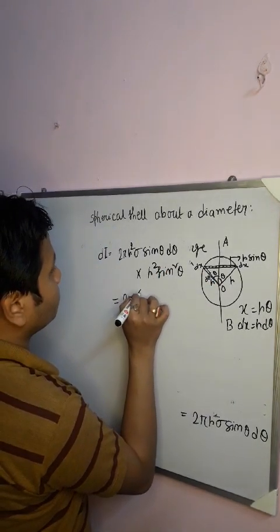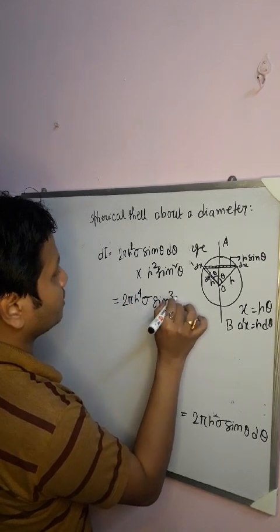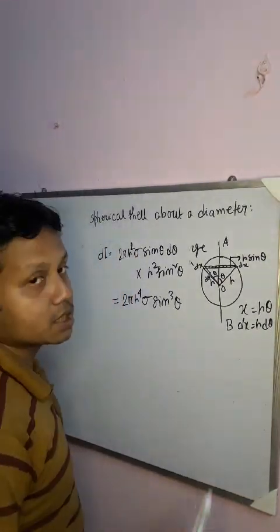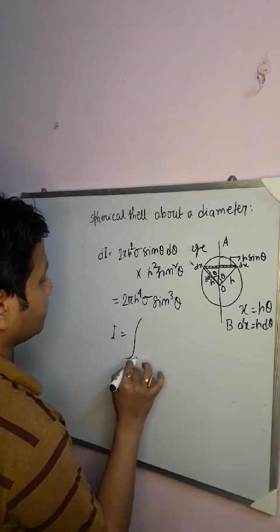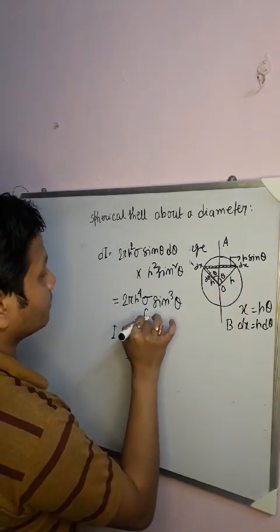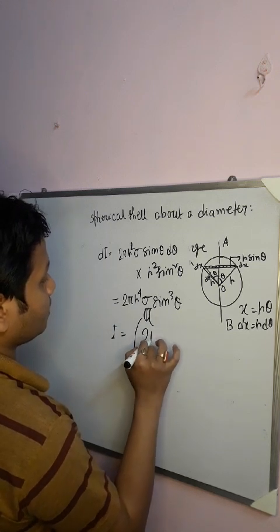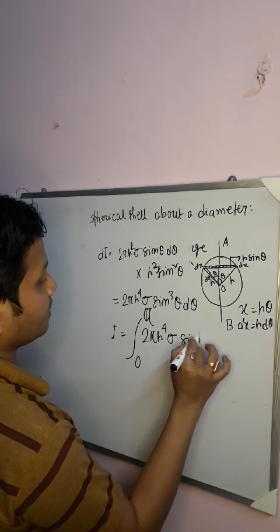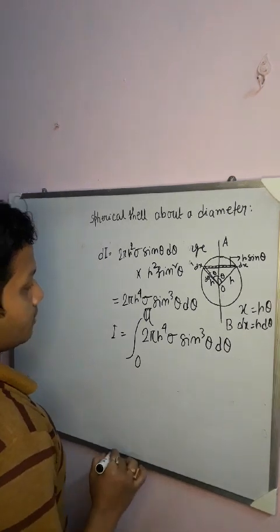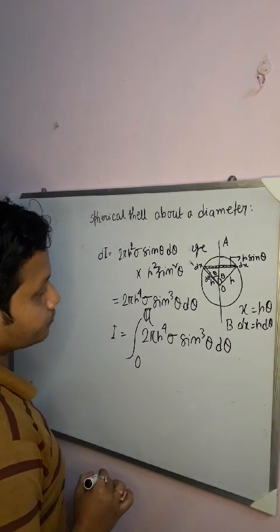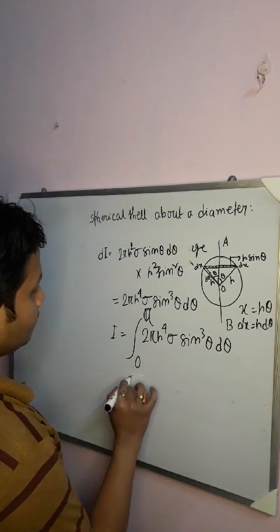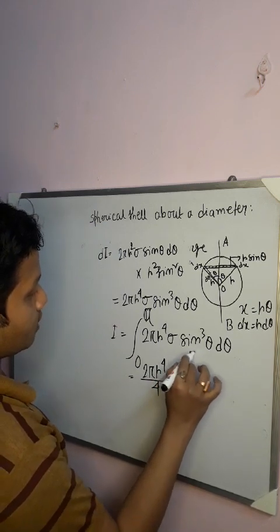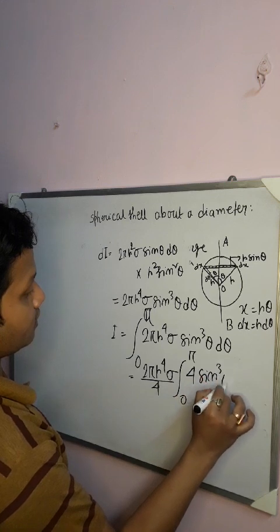The moment of inertia of the entire shell about the axis of rotation is obtained by integrating dI as θ varies from 0 to π. So I = ∫₀^π 2πR⁴σ sin³θ dθ, which equals 2πR⁴σ ∫₀^π sin³θ dθ.